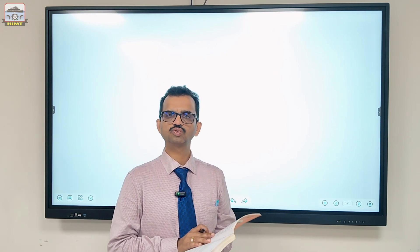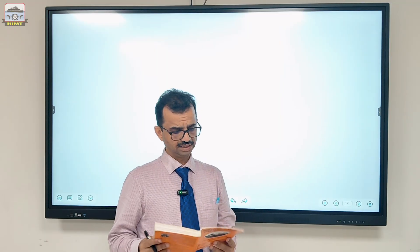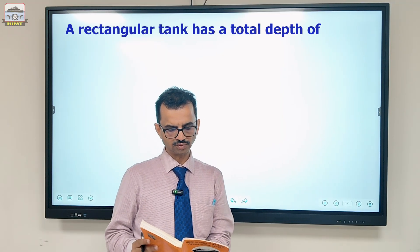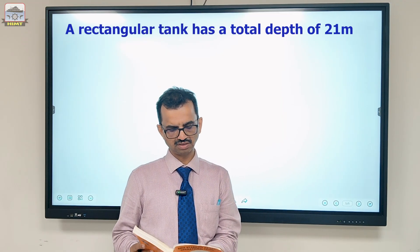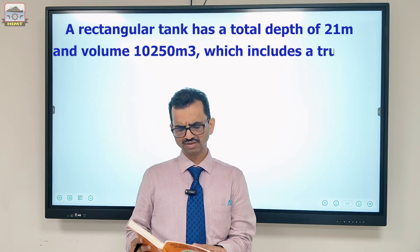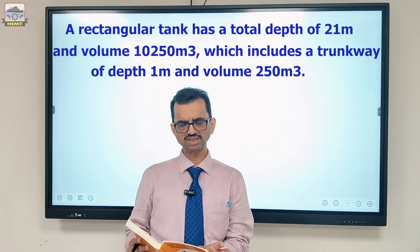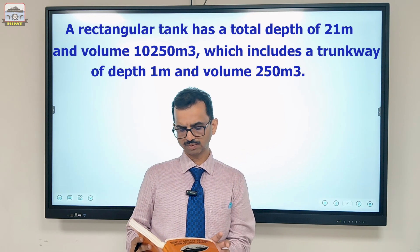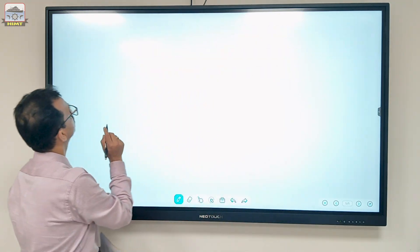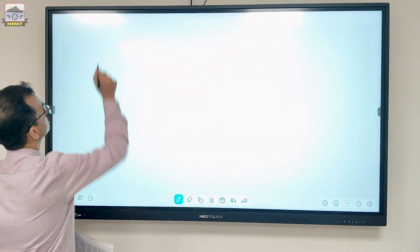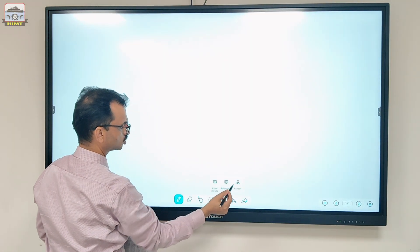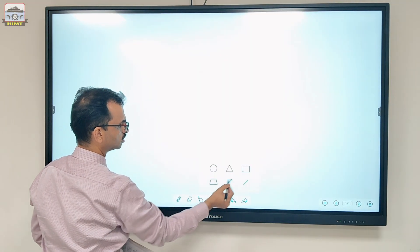Let us start question number 10. It says: a rectangular tank has a total depth of 21 metres and volume 10,250 cubic metres, which includes a trunk of a certain depth and volume. If you get the figure right, then most of the question is done correctly. So let us draw the figure.